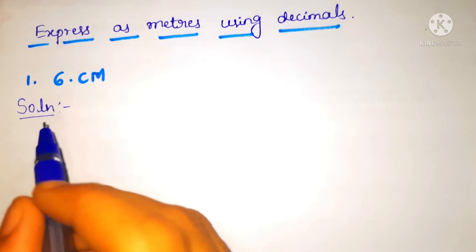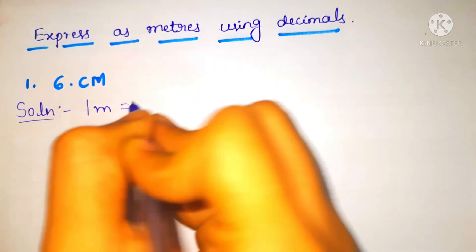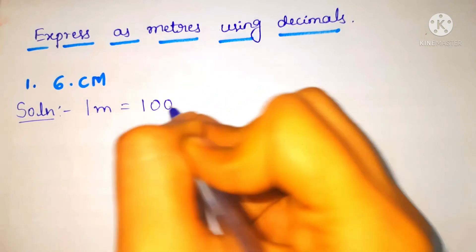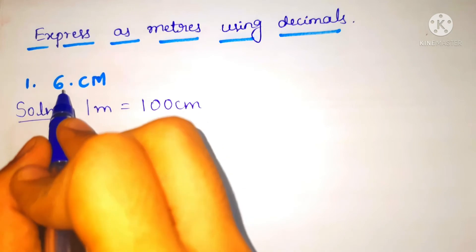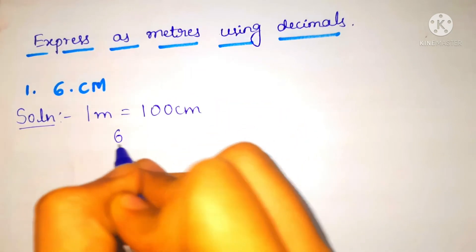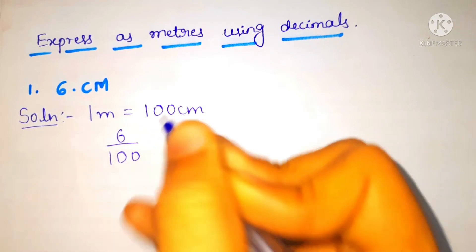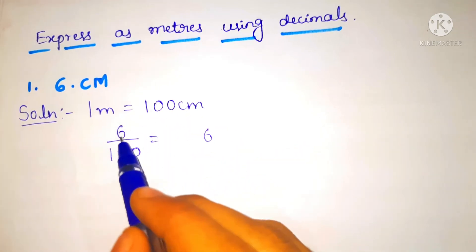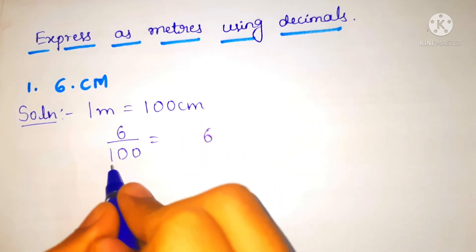The solution is, so the rule is 1 meter is equal to 100 centimeter. So we have to take 6 centimeter by 100. So we have to keep the numerator as it is, that is 6, and in number 100 we have two zeros.